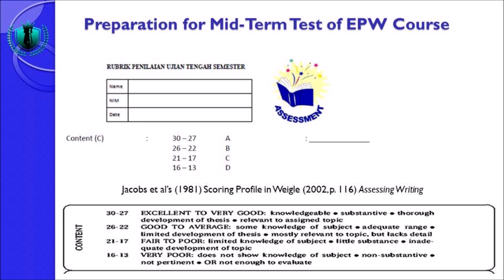The first one is content. Kalau anda ingin mendapat nilai A, range nilainya adalah 27 sampai 30. B dari nilai 22 hingga 26. C nilai 17 hingga 21, dan nilai D adalah 13 sampai 16. Rubrik penilaian ini saya adaptasi dari Jacobs et al. tahun 1981 tentang scoring profile yang ada di buku Wagle tahun 2002 halaman 116 berjudul Assessing Writing.